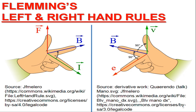Fleming's rules describe a definite relationship among the direction of the magnetic field, the direction of the voltage or current, and the direction of motion or force, for which the three fingers — the first finger, the second finger, and the thumb — are put mutually perpendicular. Fleming's left hand rule is applicable for motor action. When the first finger points towards the direction of the magnetic field and the thumb represents the direction of the force exerted on the conductor. For generator action, Fleming's right hand rule is applicable. When the first finger points towards the direction of the magnetic field and the thumb towards the motion of the conductor, then the second finger represents the direction of the induced EMF in the conductor.